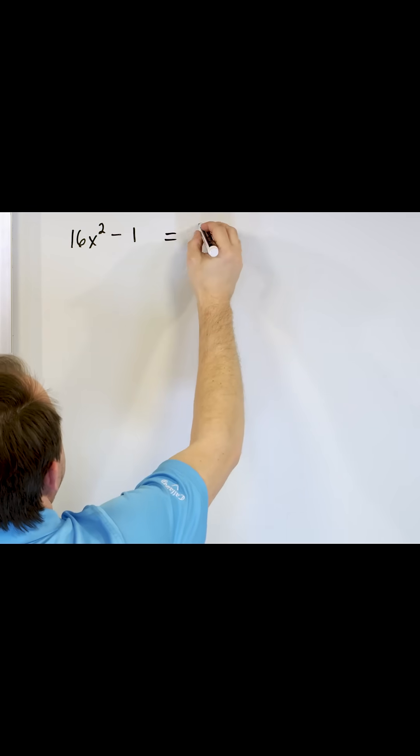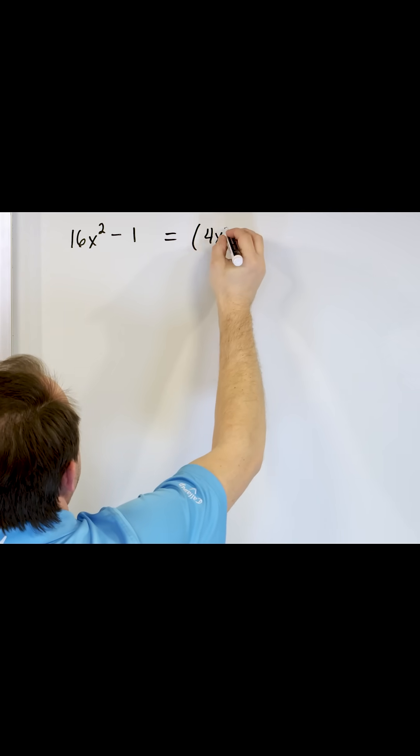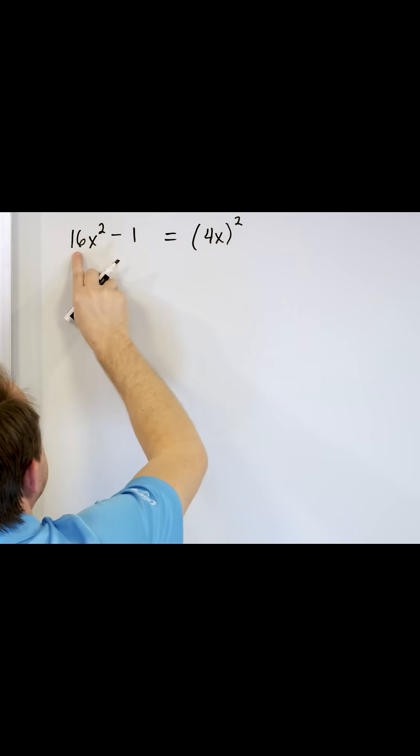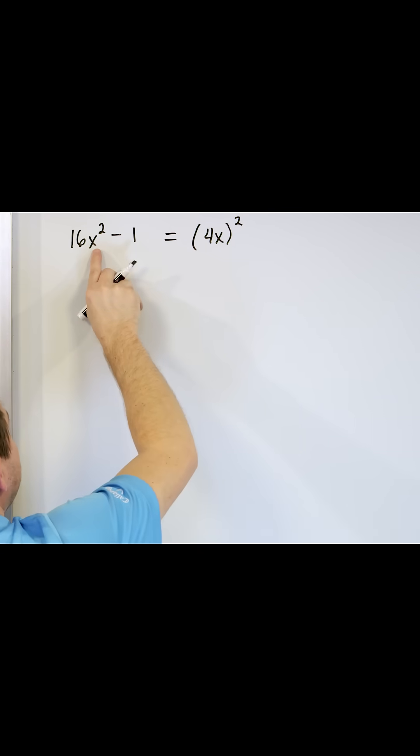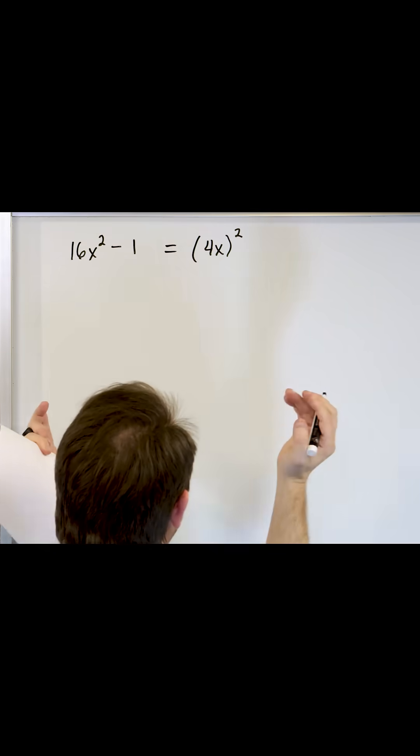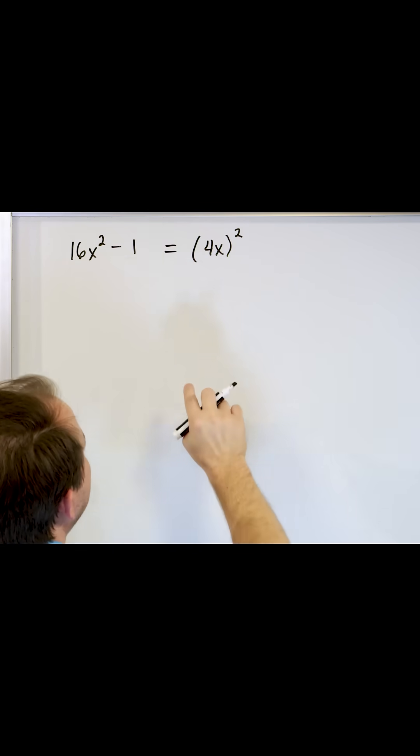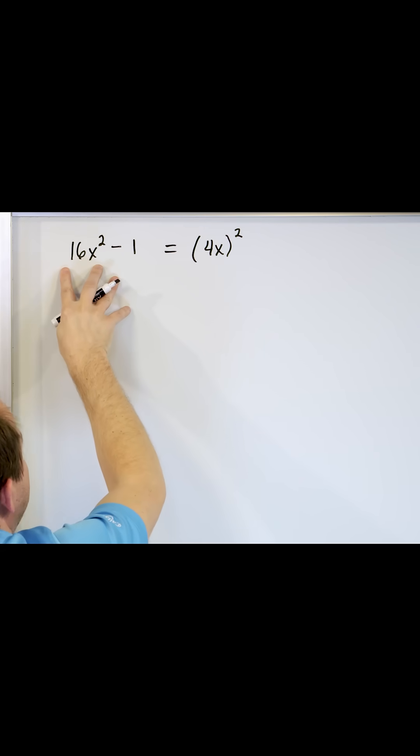So I can write this as 4x quantity squared. That's really what the first term is because 4 squared is 16 and x squared is x squared. So the quantity a, a squared minus b squared, a is just the whole entire quantity 4x. That's what has to be squared in order to give me this back.